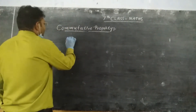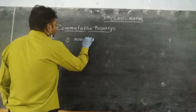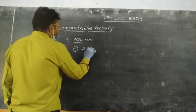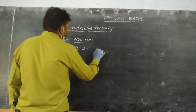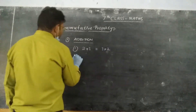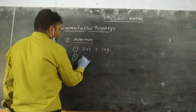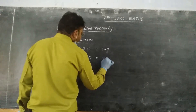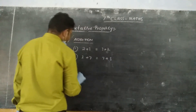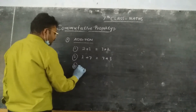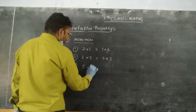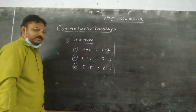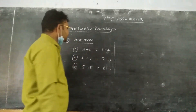First, under addition: Problem 1 — 2 plus 3 is equal to 3 plus 2. Problem 2 — 3 plus 7 is equal to 7 plus 3. Problem 3 — 5 plus 8 is equal to 8 plus 5. Come on and verify these problems.